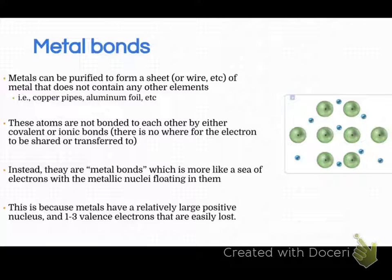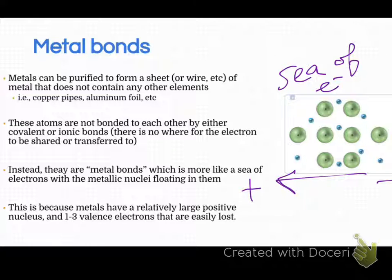And so when you run a current through it, all these electrons are going to go towards the positive side and away from the negative side, and that allows you to conduct electricity. And that's why metals can do that, because metals have metal bonds.